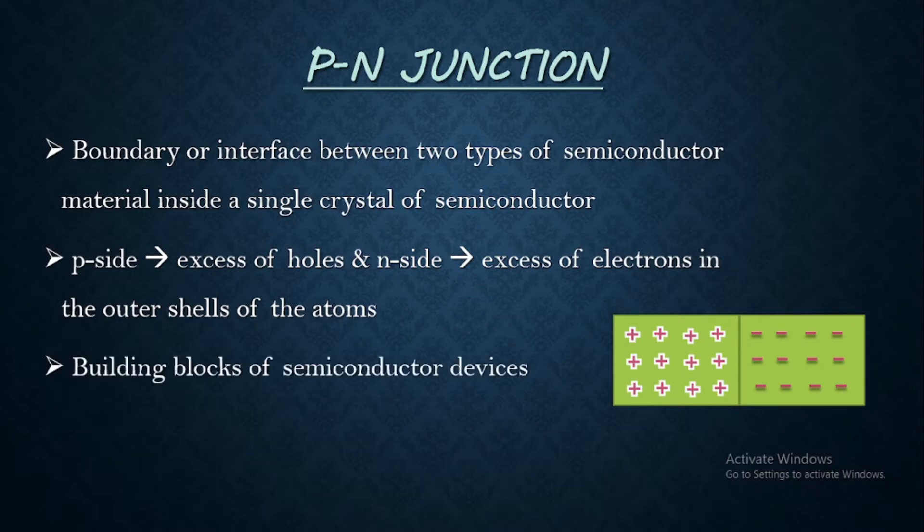And P-N junctions are the elementary building blocks of any semiconductor devices like diodes, transistors, solar cells, LEDs or ICs. ICs means integrated circuits. And they are the active sites where the electronic action of the device is going to take place. And these are some of the basics which explains what actually is a P-N junction.